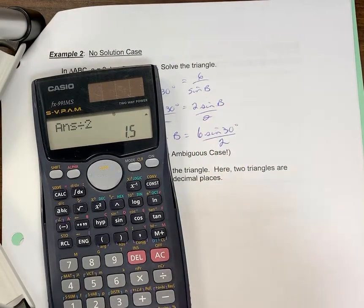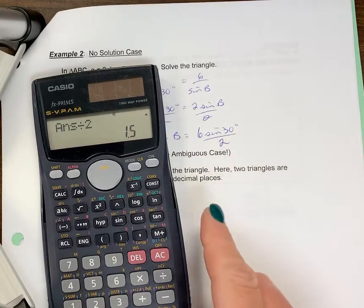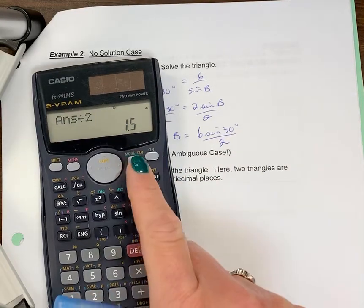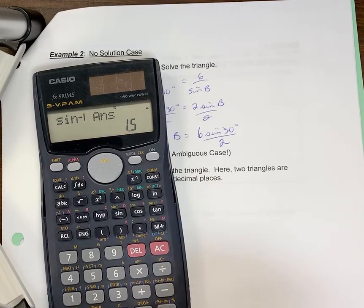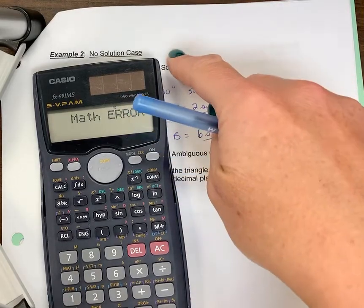1.5 is not valid, because it's greater than 1, and we know sine values have to be less than 1. And even if you didn't realize, what happens is, when you go shift sine and you put in that answer of 1.5, it's going to give me an error message. So that is not possible. This is why it's no solution.